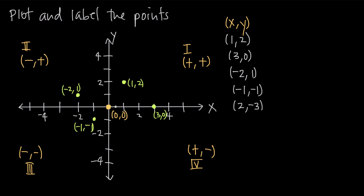What about (2, -3)? We go out in the positive direction of the x-axis 2 units, then down in the negative direction of the y-axis 3 units — 1, 2, 3 — right about here. We want to make sure whenever we're plotting points that we stay lined up with each of our grid lines. So we stay lined up with positive 2 on the x-axis and negative 3 on the y-axis. This point accurately represents (2, -3).